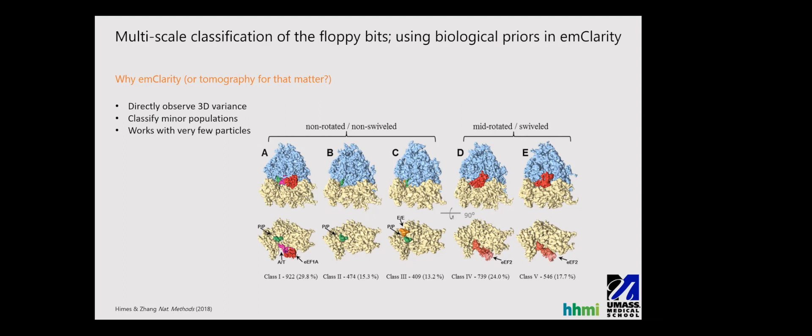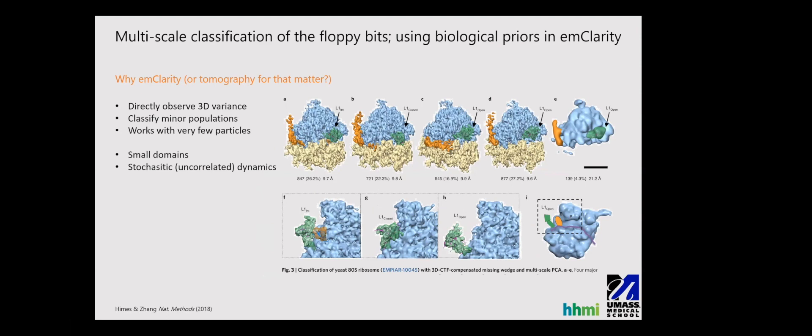And what that allows us to do that is harder with single particle type data sets is to classify minor populations. So very small, low occupancy classes that sometimes tend to get swallowed up into more populated classes. But importantly, it also allows us to work with very few particles. So the results on the screen now are from about 3,000 ribosomes, whereas you have another probably two orders of magnitude in your typical single particle data set. In addition to those benefits, we can also look at small domains, and the results I'm showing here are from again about a 3,000 particle data set.